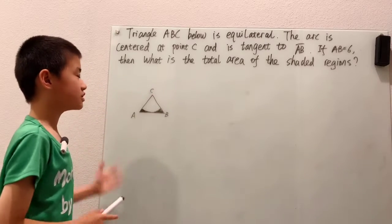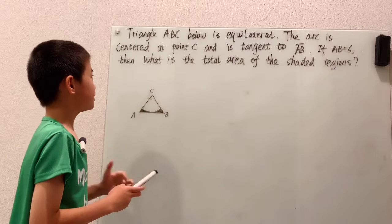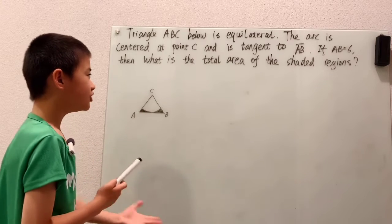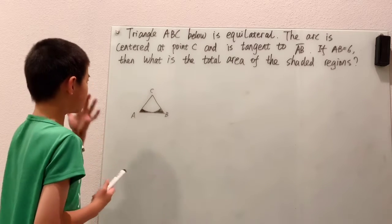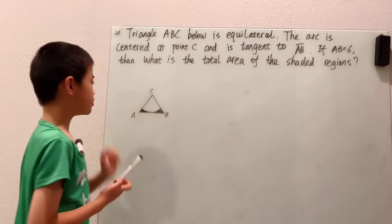Triangle ABC below is equilateral. The arc is centered at point C and is tangent to AB. If AB equals 6, then what is the total area of the shaded region?